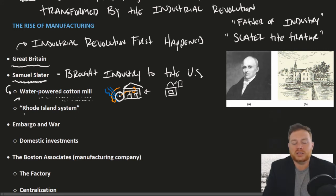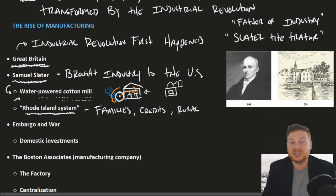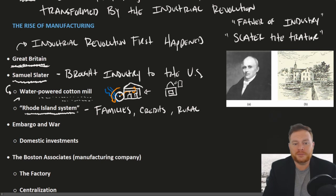Samuel Slater's factories were called the Rhode Island system. Generally speaking, the Rhode Island system hired entire families — men, women, and children worked in the factory. They were paid credits, not wages, and in most cases these were located in more rural parts of the country. Since Great Britain was the first to industrialize, they dealt with negative side effects — overcrowding, pollution, a rowdy and violent working class. The Rhode Island system was a hope to reap the benefits of industry while avoiding those pitfalls.